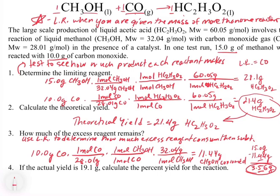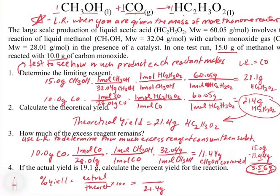The last part is the percent yield calculation. The actual yield is 19.1 grams. Calculate the percent yield. Percent yield equals actual divided by theoretical times 100. Our theoretical yield was 21.4 grams and our actual yield is 19.1 grams. So 19.1 divided by 21.4 equals 89.1 percent. That's our answer.